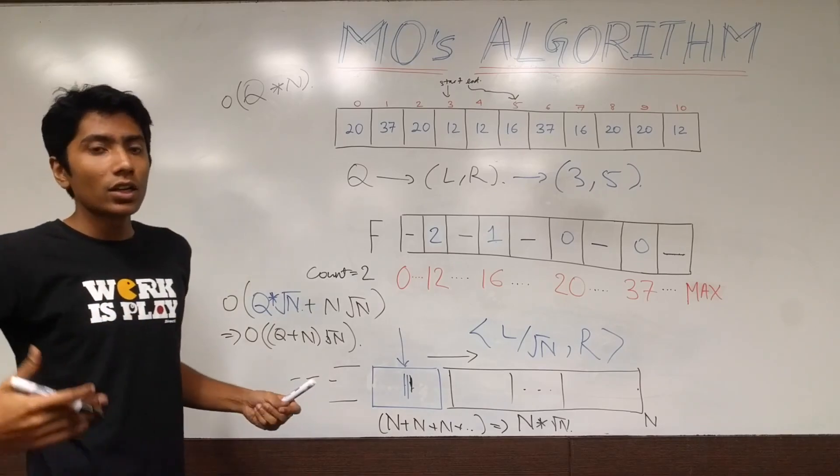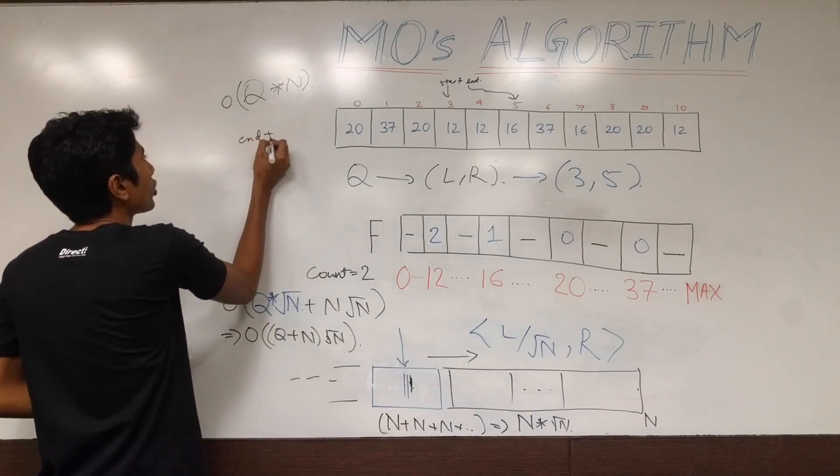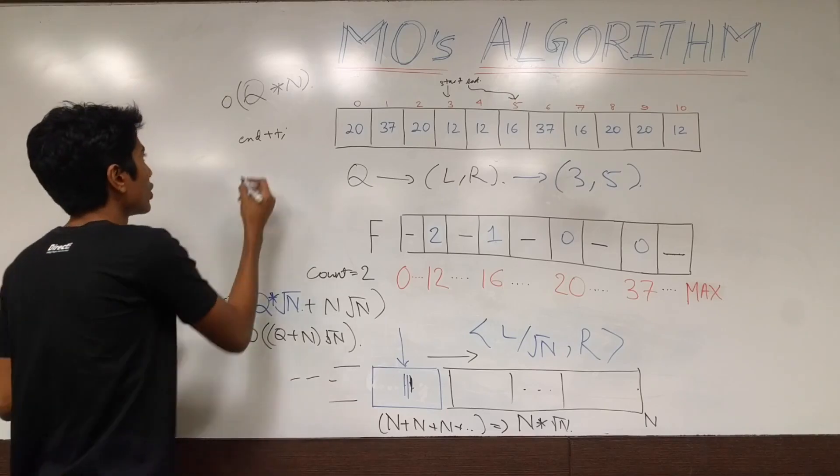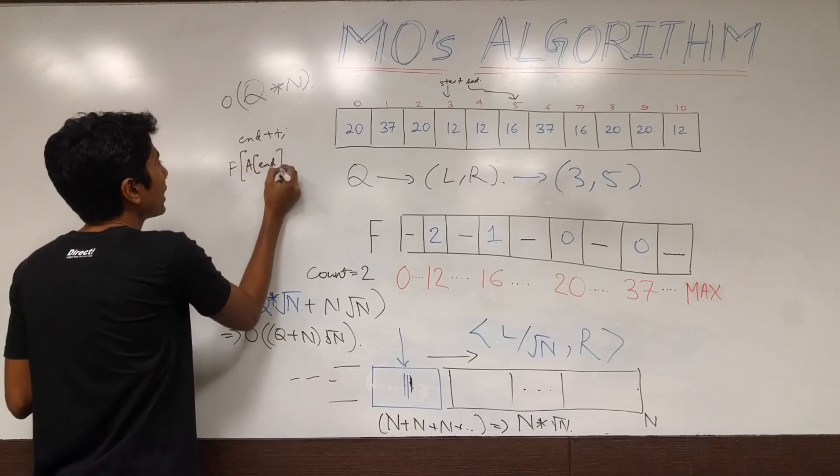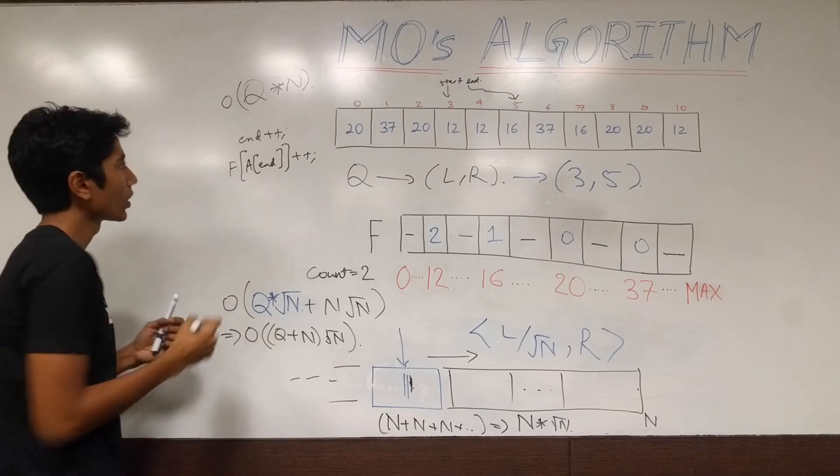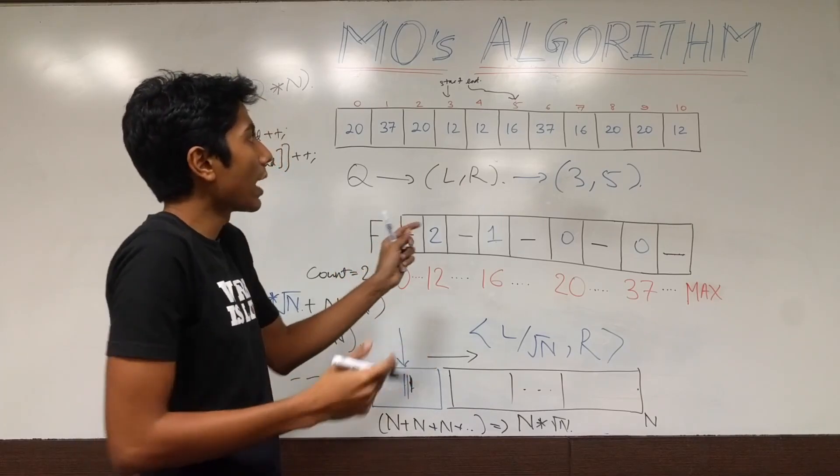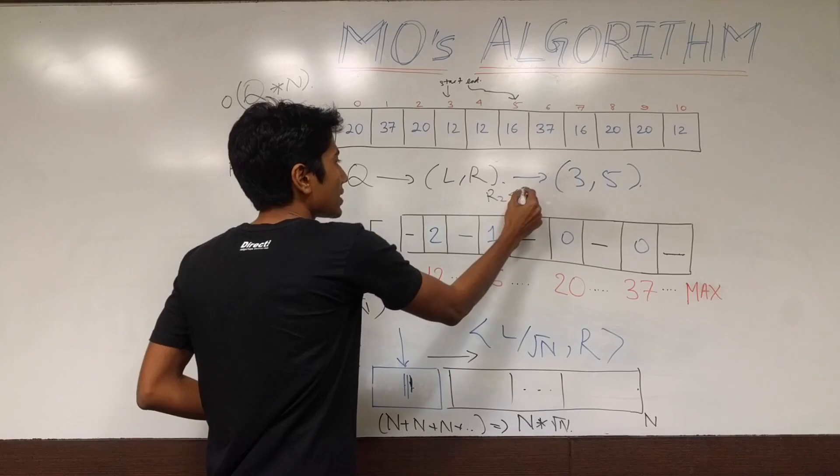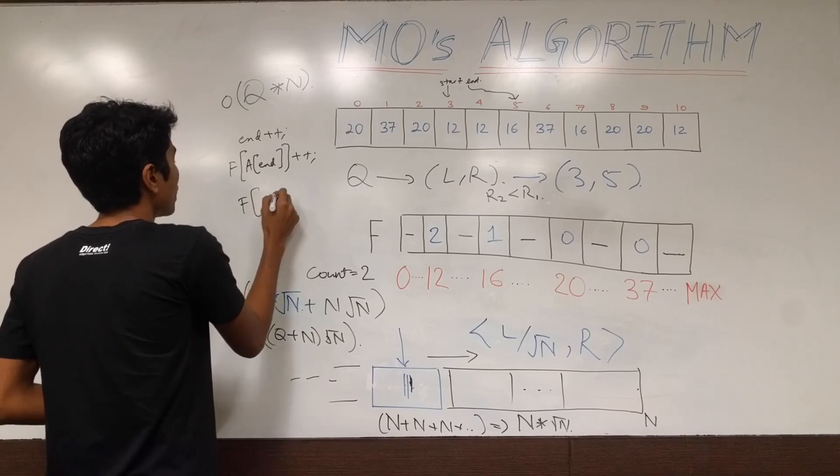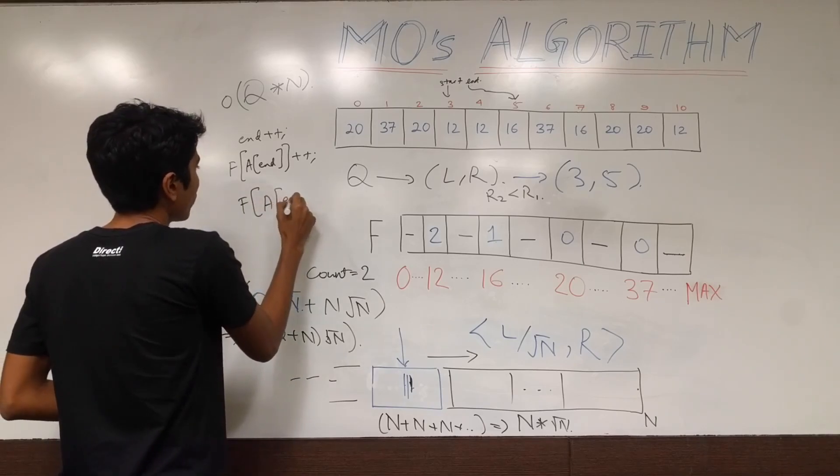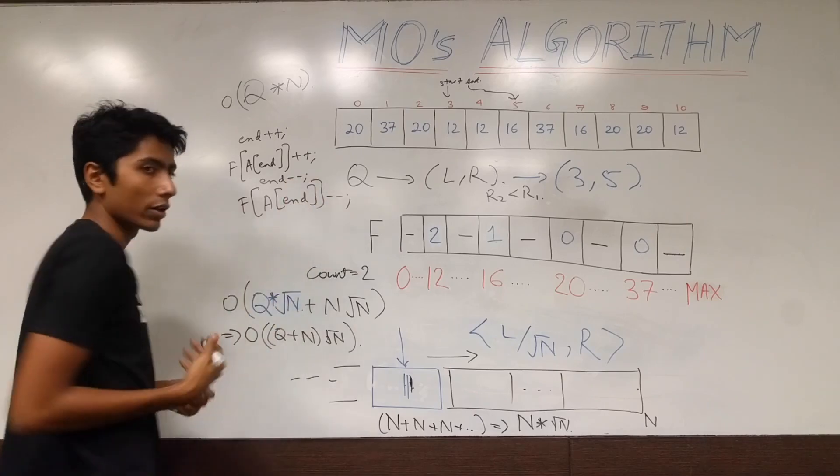Anytime you need to update your end pointer, you need to push it more to the right. Then, what you need to do is you need to do end plus plus of course. And you need to increment the frequency of the element at end by one. If you need to move your end pointer to the left, which could happen if your next query r2 is actually less than r1. If that happens, then f needs to be decremented and before that you will be decrementing end of course.